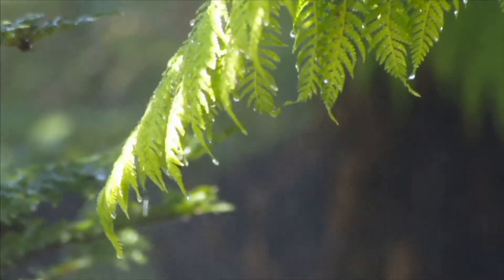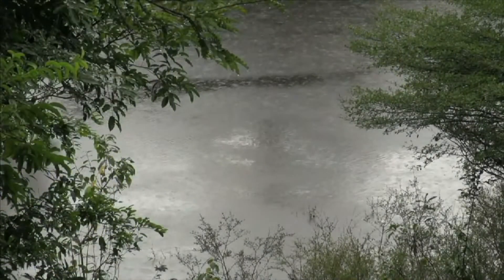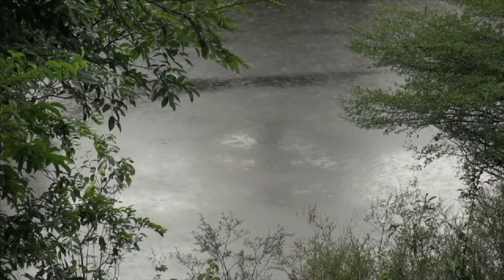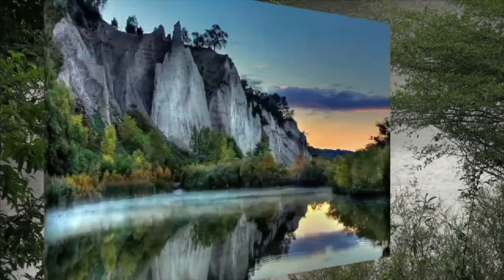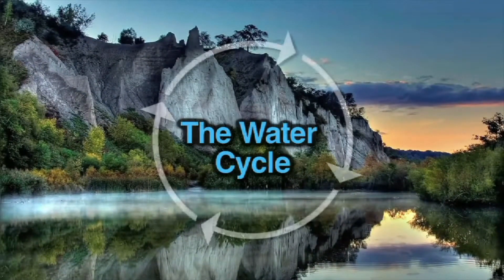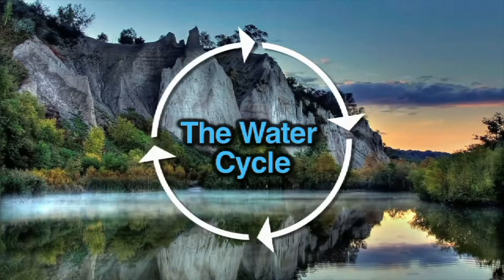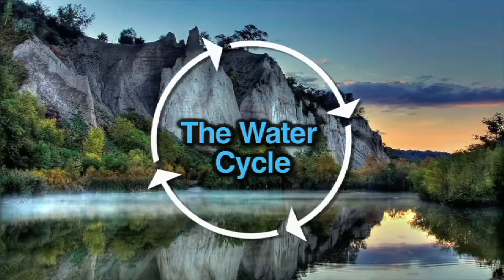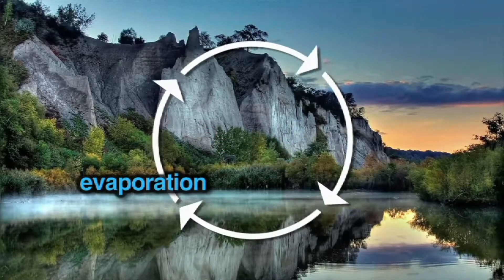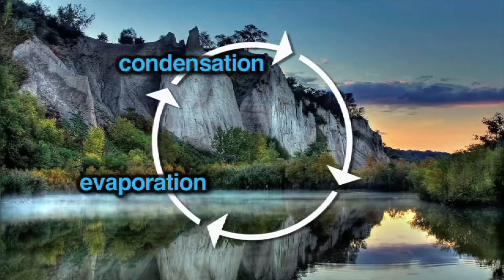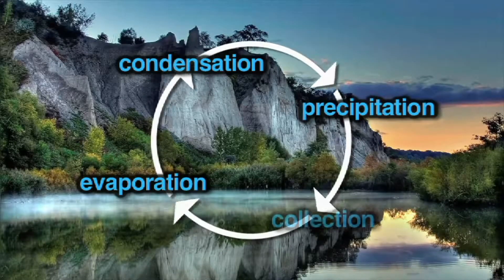Precipitation is a major part of the water cycle and is responsible for delivering most of the fresh water on the planet. There are four steps of the water cycle that help recycle and distribute the limited amount of water on Earth throughout the planet. They are evaporation, condensation, precipitation, and collection.